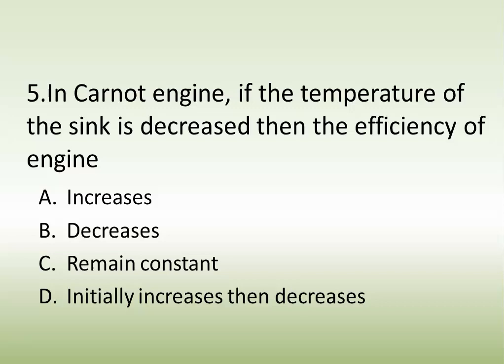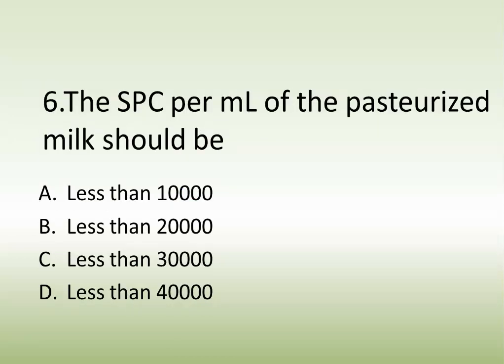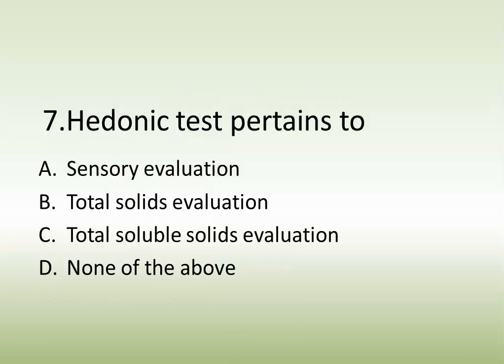Question number six: the SPC (Standard Plate Count) per ml of pasteurized milk should be. Options are: less than 10,000, less than 20,000, less than 30,000, or less than 40,000. The correct answer is less than 30,000.